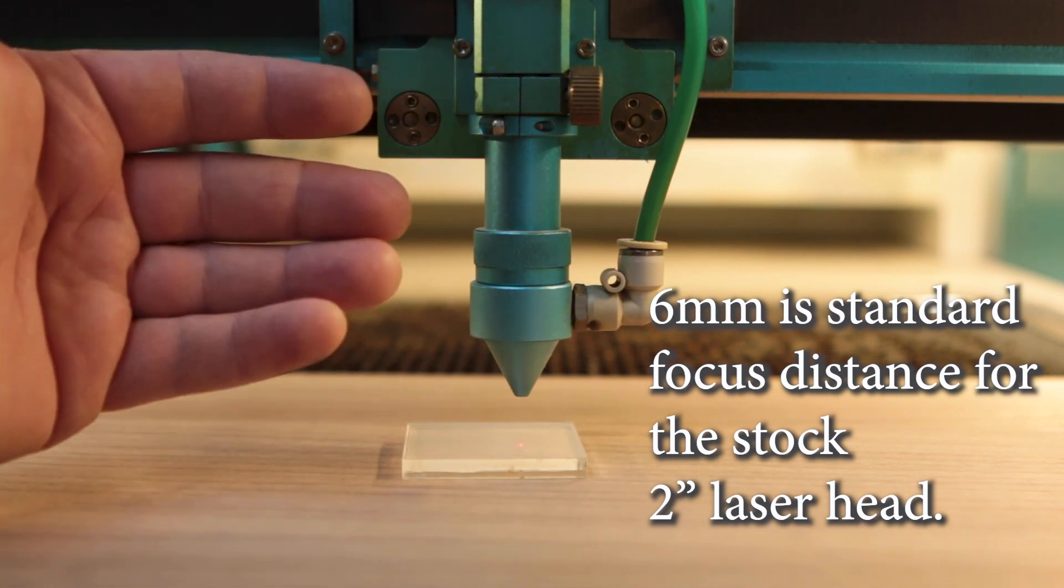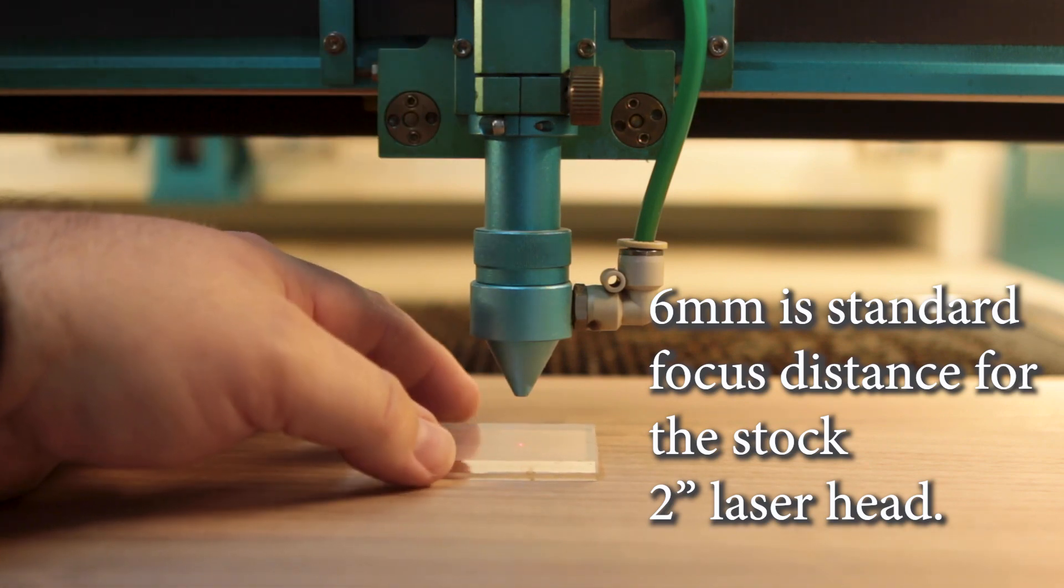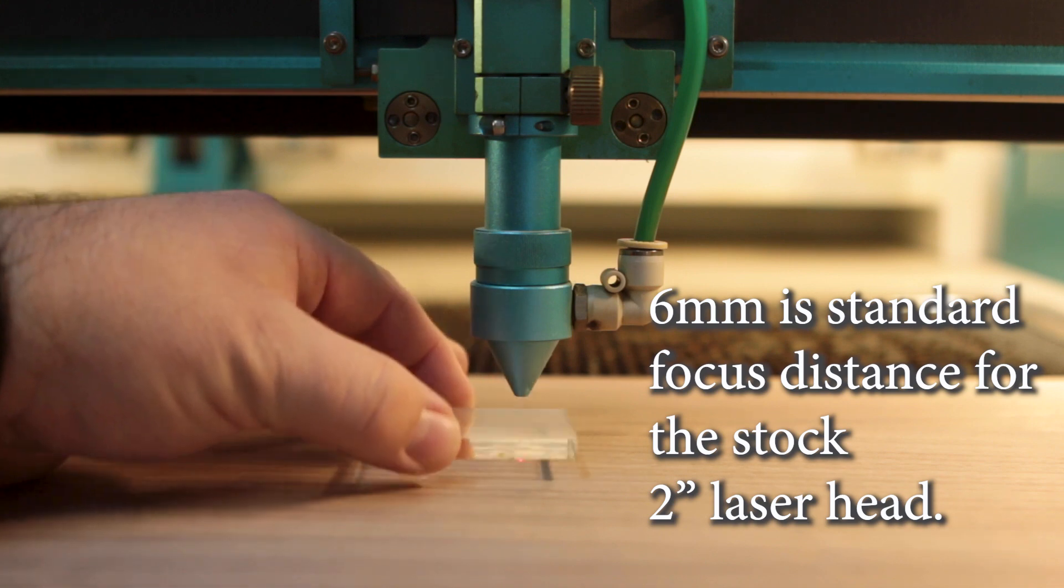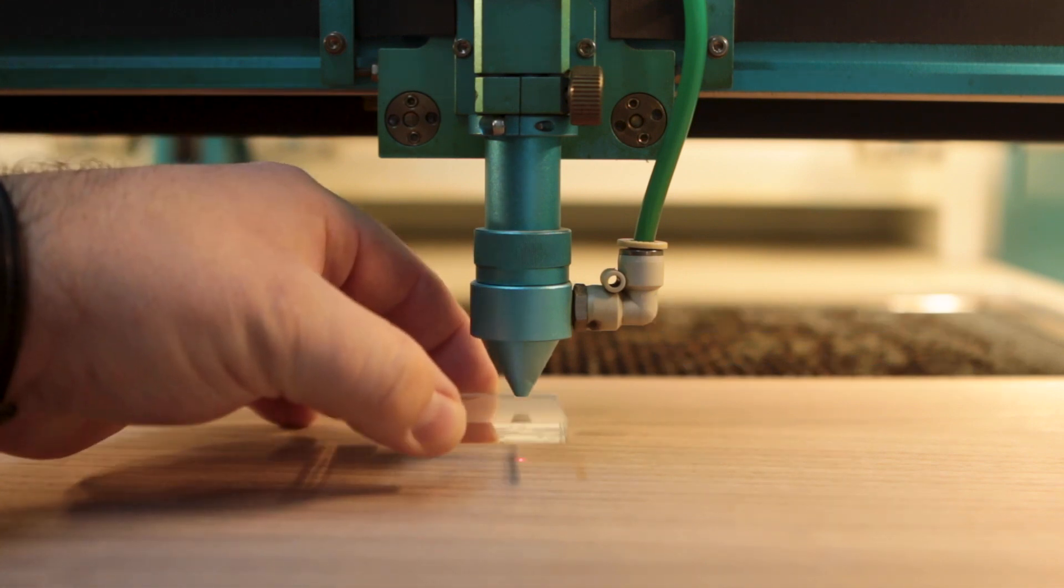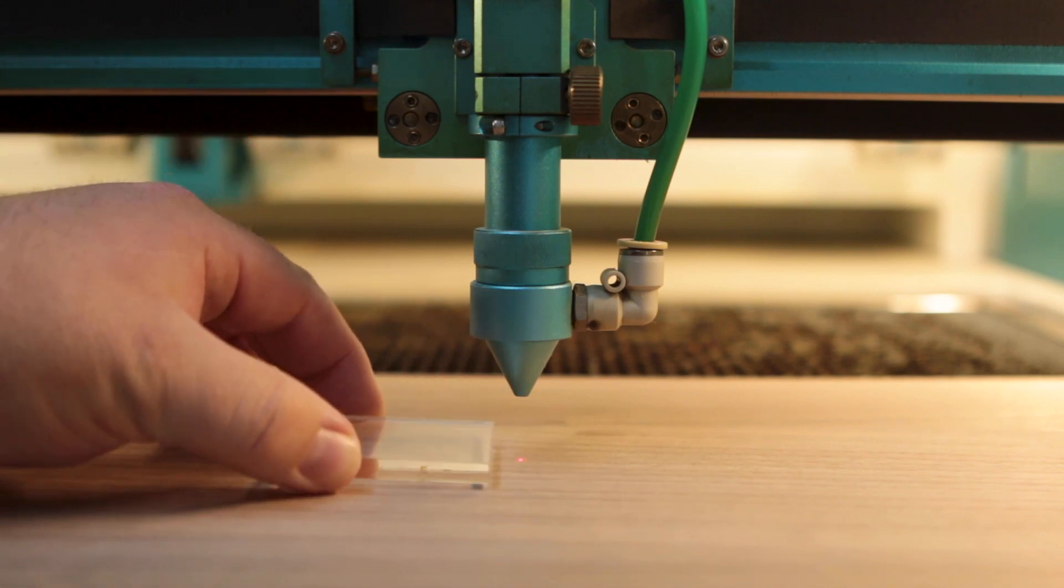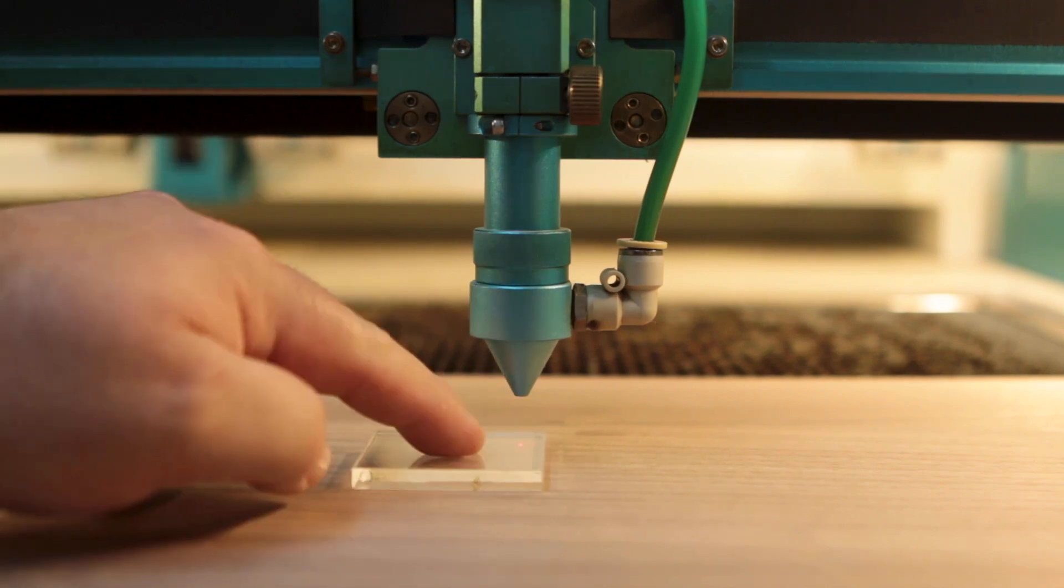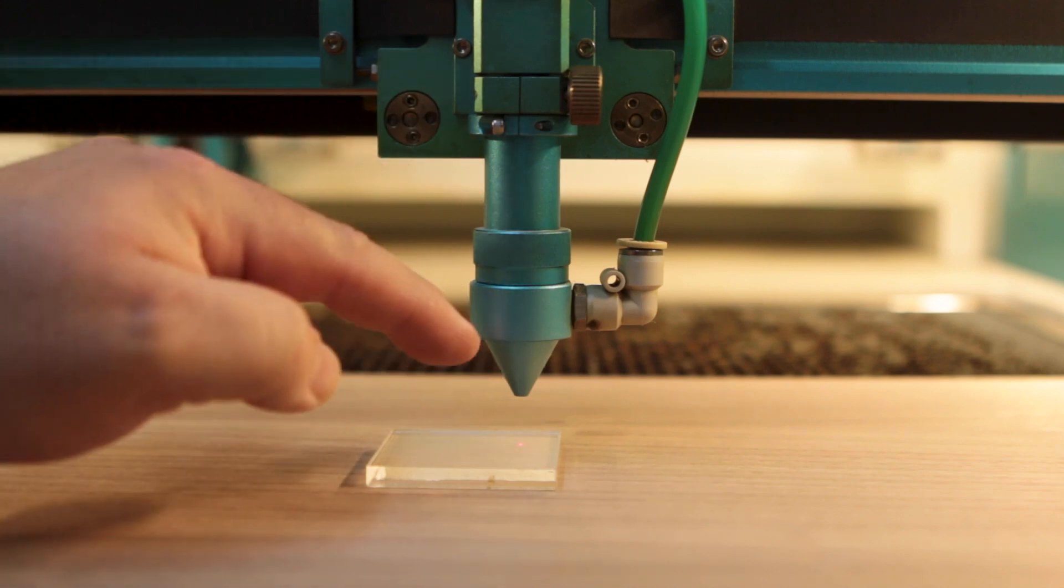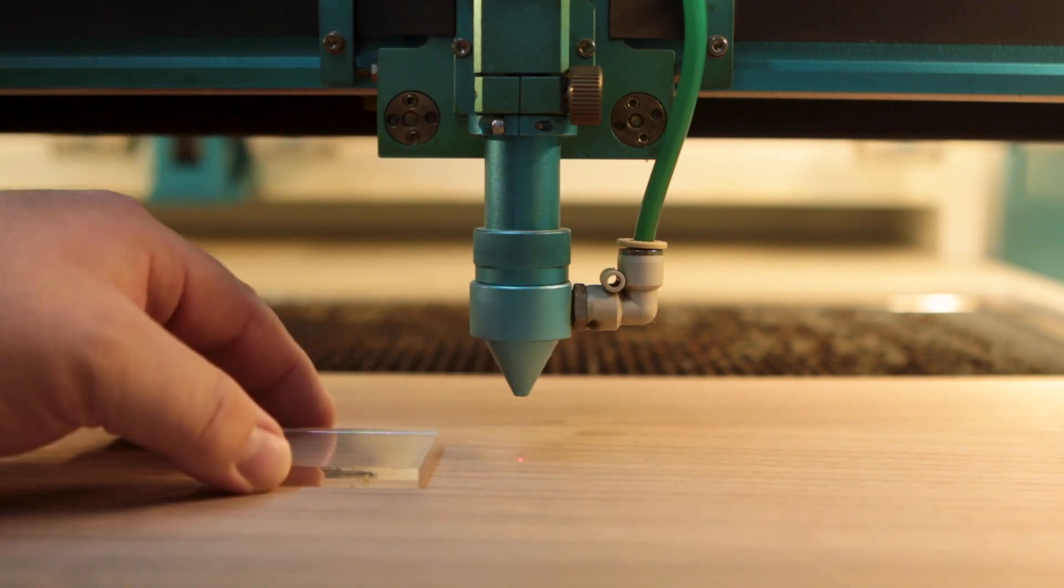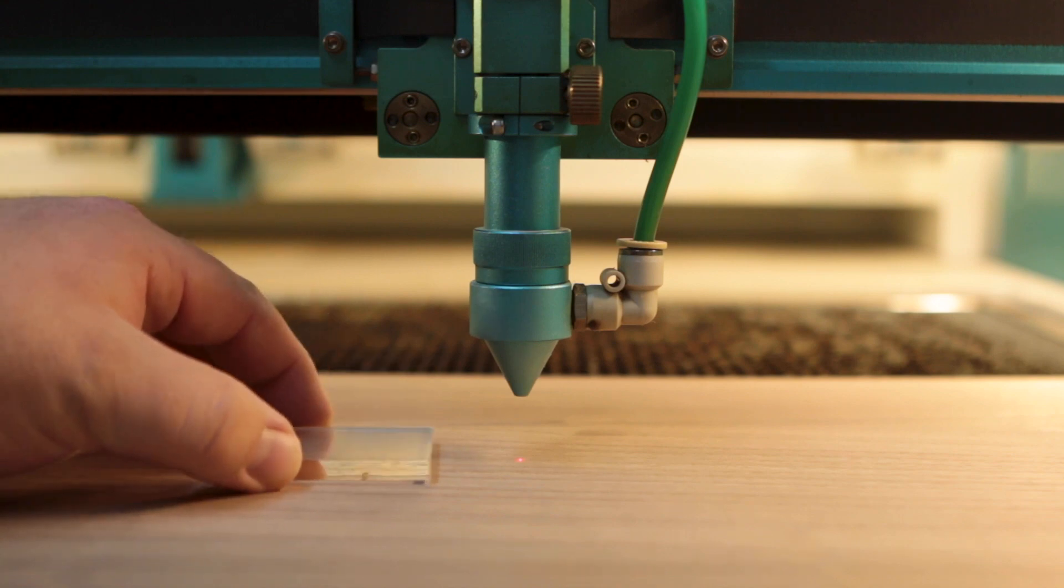So six millimeters is where the preferred focus is for most things. And as you will see, you have quite a bit of gap between your material and the nozzle of your laser head here. So we want to close that gap so it fits on here. The first thing we're going to do is raise our laser bed up to where it is close to this nozzle. But you will notice that I moved the little square out of the way before we started raising this.